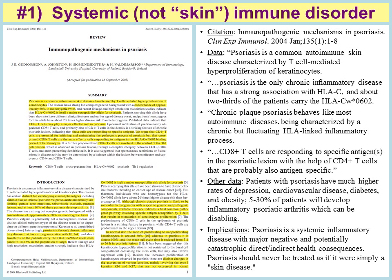The major point I want to make here is that psoriasis is not simply a skin disorder. It is an immune disease that acts like an autoimmune condition — very similar to rheumatoid arthritis — and it needs to be addressed and treated in a holistic, integrative, multicomponent fashion in order to help patients achieve the best results possible. If we simply put creams and salves on the skin, we are not addressing the underlying problem. The implications of this research are clear: psoriasis is a systemic inflammatory disease with major negative and potentially catastrophic direct and indirect health consequences, and should never be treated as if it were simply a skin disease.